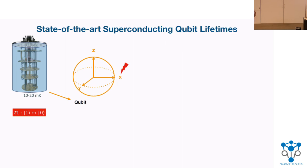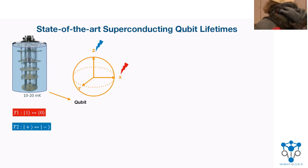For example, the T1 error, also called relaxation error, is similar to a bit flip — it takes qubit state one to qubit state zero and vice versa. You could also have T2 errors, which are dephasing errors, messing up your superposition of one state and zero state, taking the plus state to the minus state and vice versa.